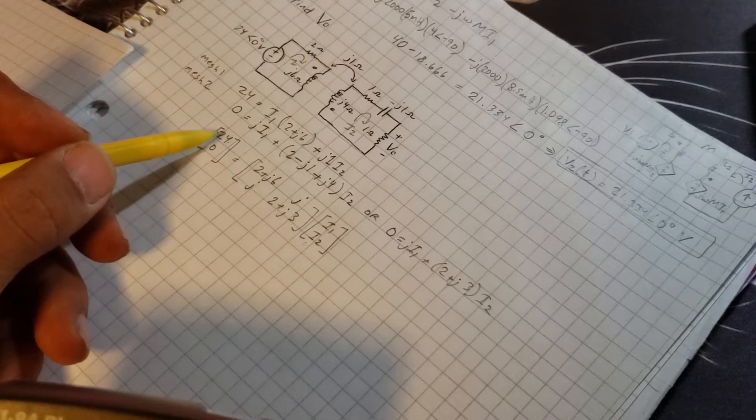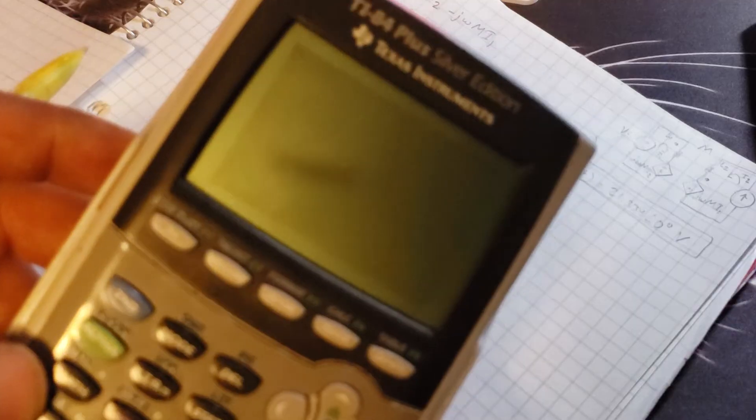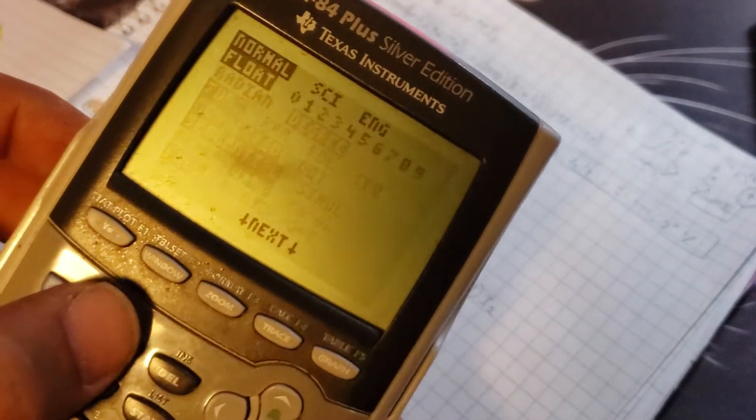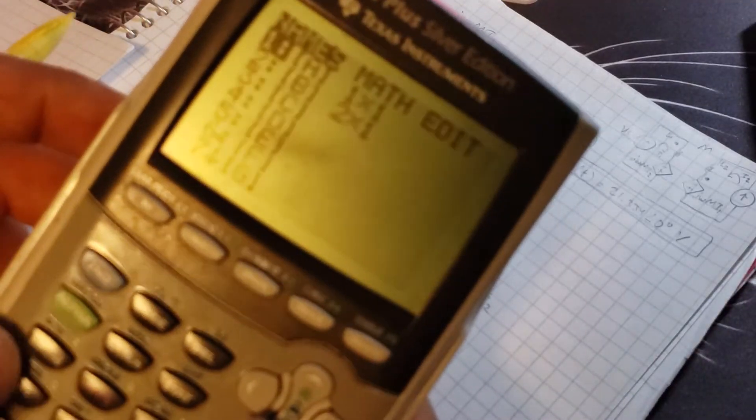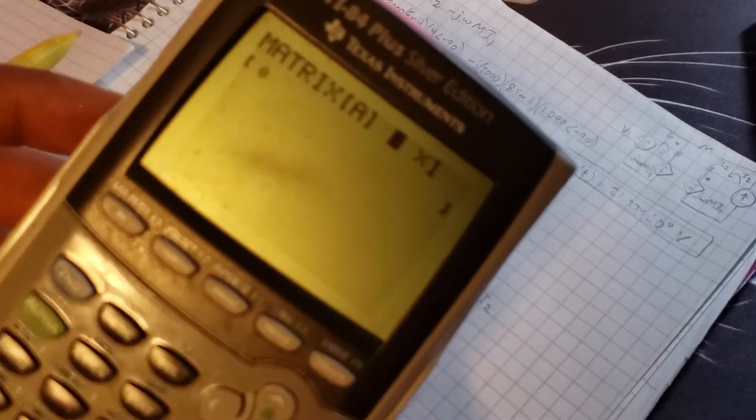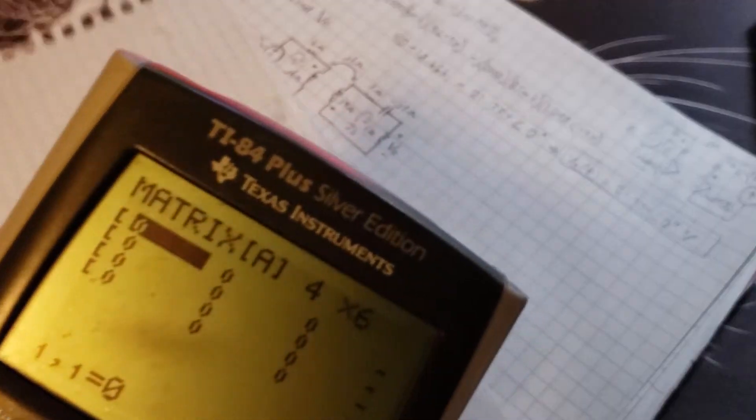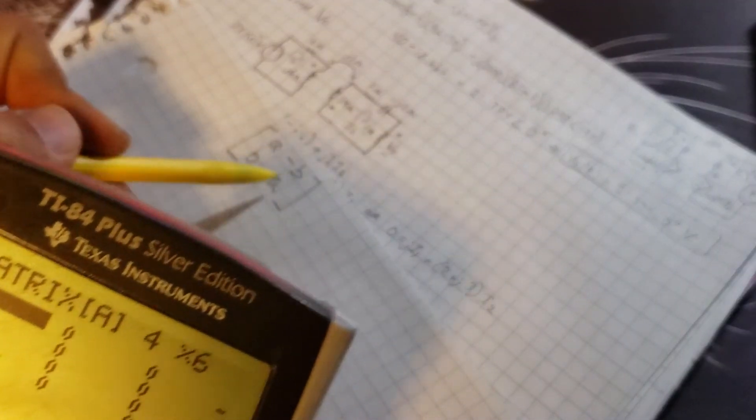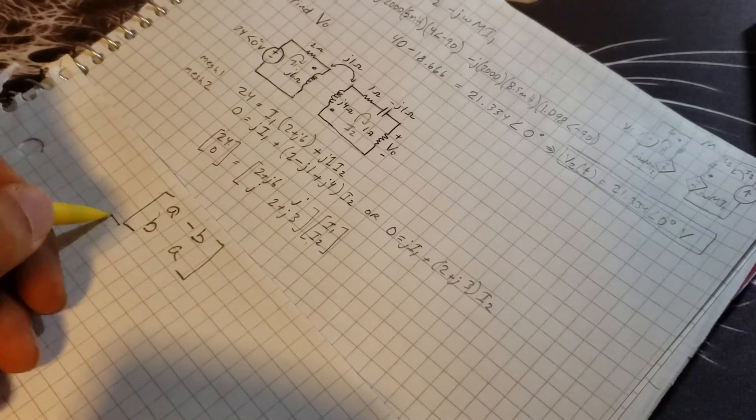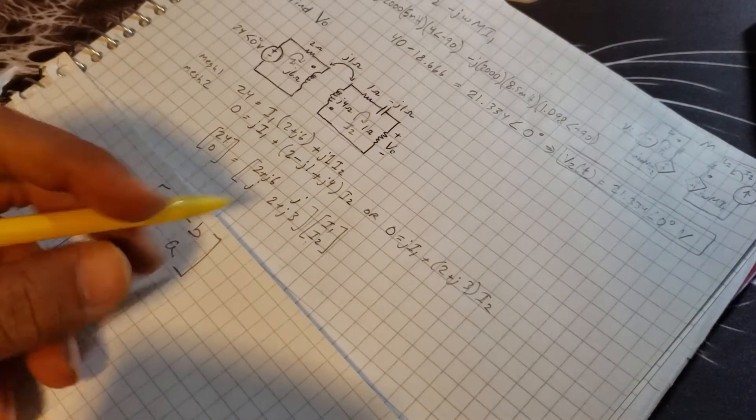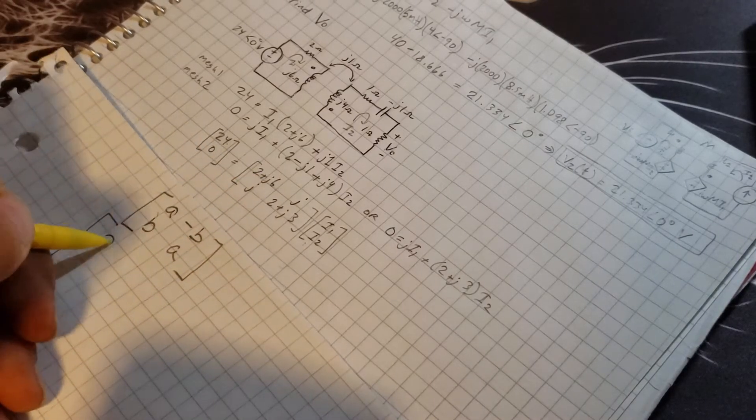First, make sure that your mode is in degree and a + bi. Then go second matrix, go over to edit, and I'm going to choose 4x6. This is the important part: a, b, negative b, a. This is how I'm going to copy this down. The first term 2 + j6, you put a 2, that's your a, your b is 6.